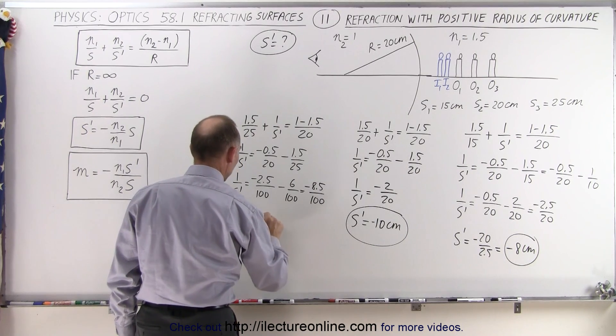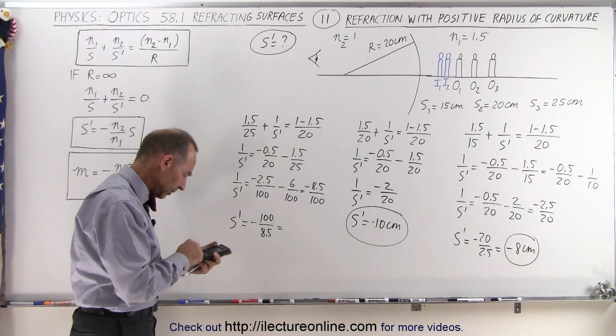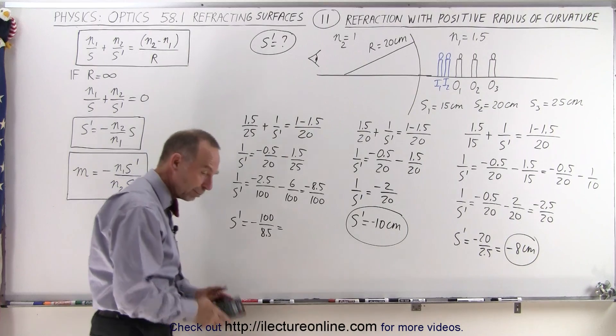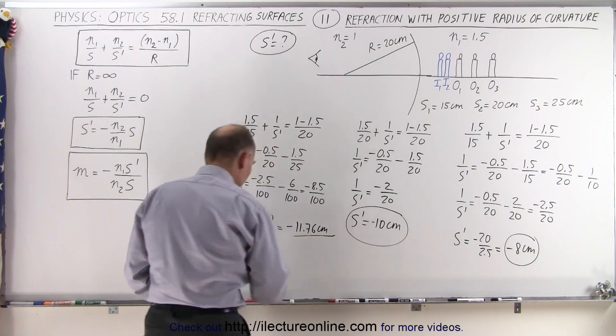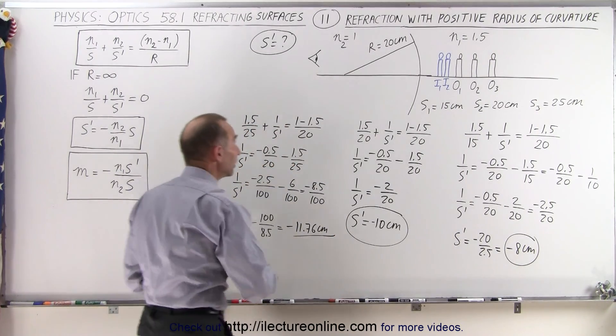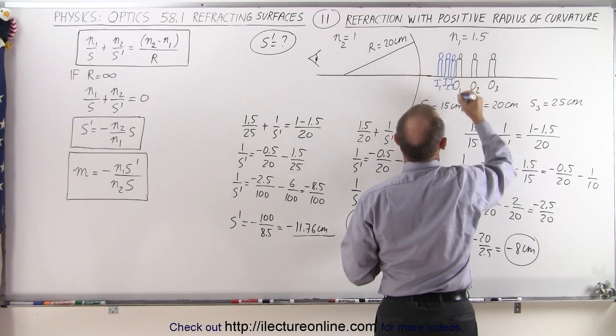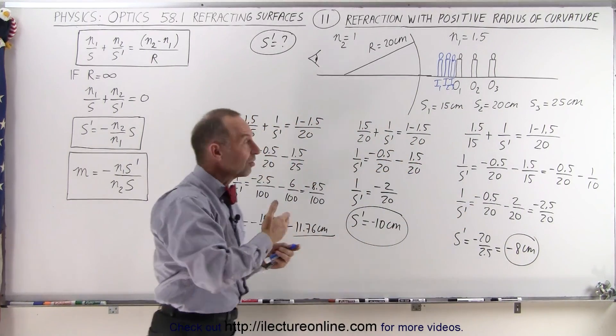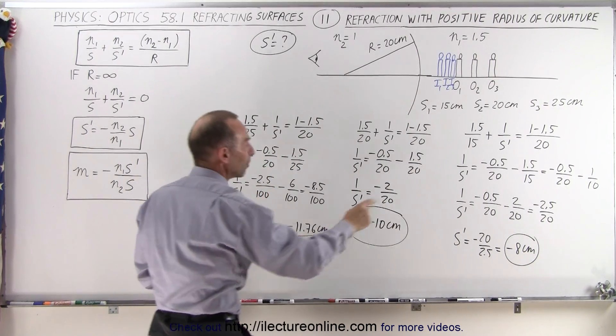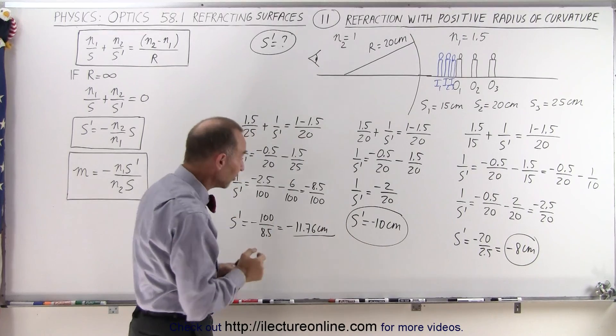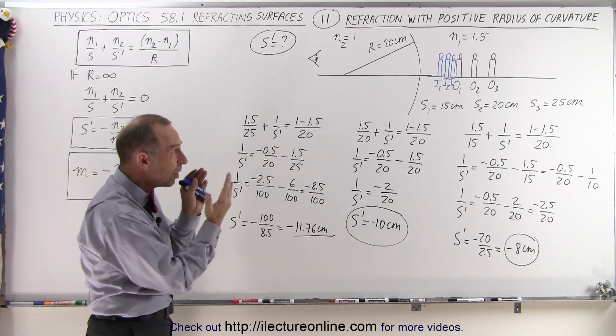which means that S' is equal to minus 100 over 8.5. So 100 divided by 8.5 is equal to 11.76, or minus 11.76 centimeters. Notice that it keeps moving to the right, but not by very much. So here we have I3. So as the object distance moves a steady 5 centimeters at a time, the image distance moves a smaller distance each time. So it goes from minus 8 to minus 10, which is a move of 2 centimeters, and then from minus 10 to minus 11.76, which is a move of less than 2 centimeters.